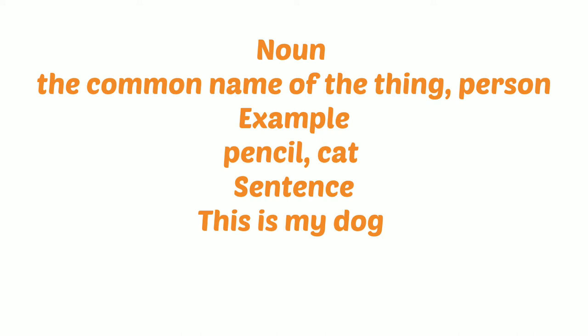Number one is noun. Noun is the common name of a thing or a person. For example, pencil, cat. Sentence: this is my dog. In the sentence, dog is noun.